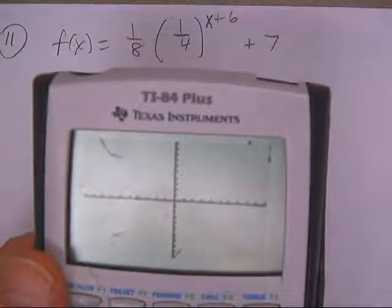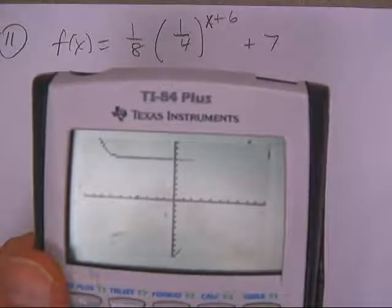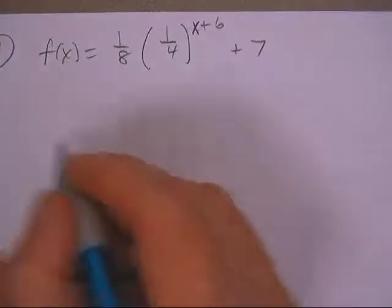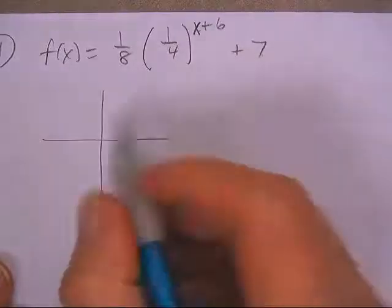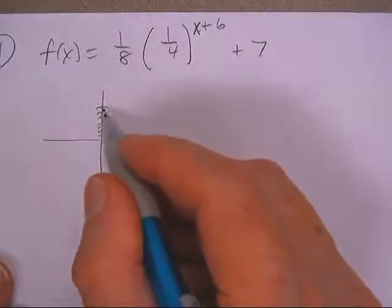And then when you graph it, we're going to come down and that's eight on the axis. Actually, it's seven, one, two, three, four, five, six, seven.